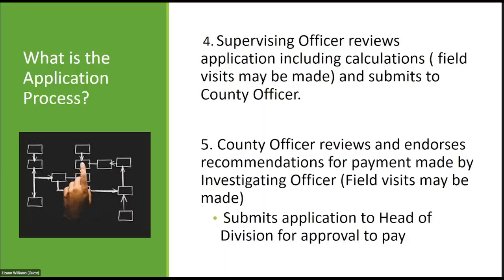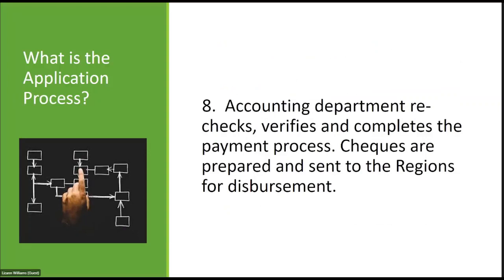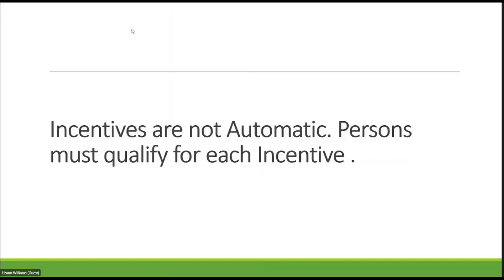The application is then submitted to the Head of Division for approval — usually the Director of the Regions, either North or South. The Head of Division approves recommendations, and field visits may be made. The application is then submitted to administration for accounting procedures. Administration commences accounting procedures to execute payments and forwards the application with documents to the accounts head office for preparation of checks. The accounting department rechecks, verifies, and completes the process. Checks are prepared and sent to the region for disbursement.